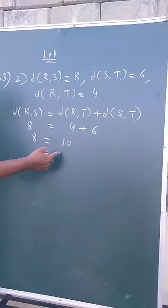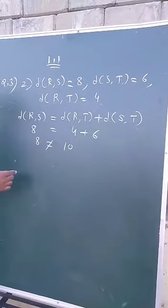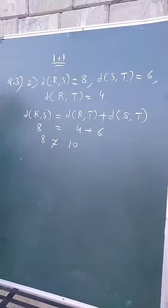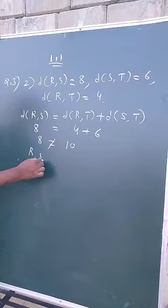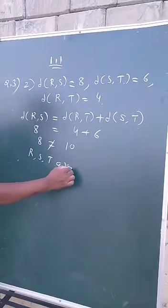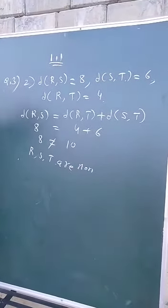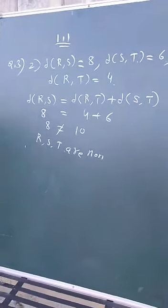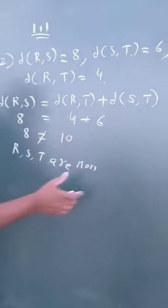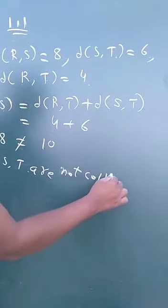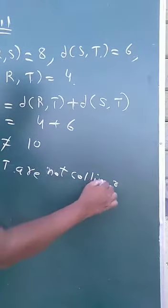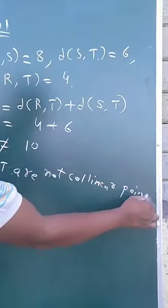Left-hand side is 8, right-hand side is 10. They are not equal. Therefore, points R, S, T are not collinear points.